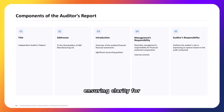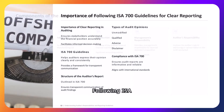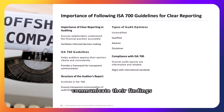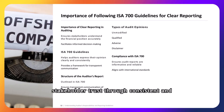Following ISA 700 guidelines ensures clear and transparent reporting, helping auditors communicate their findings effectively and fostering stakeholder trust through consistent and reliable audit reports.